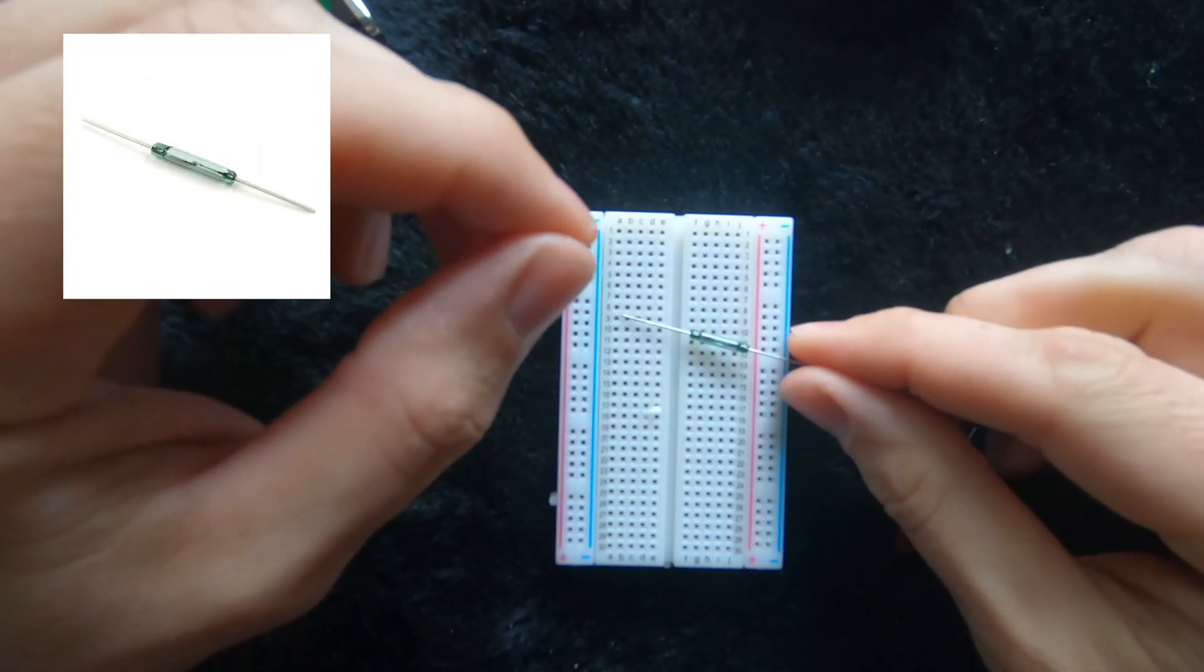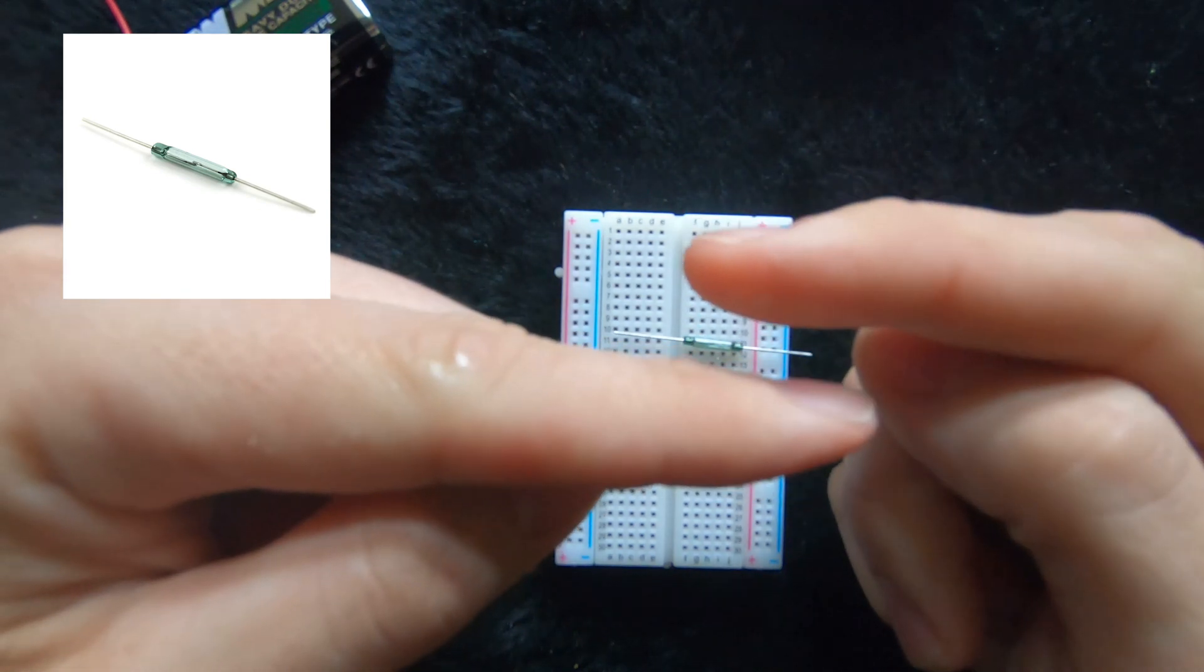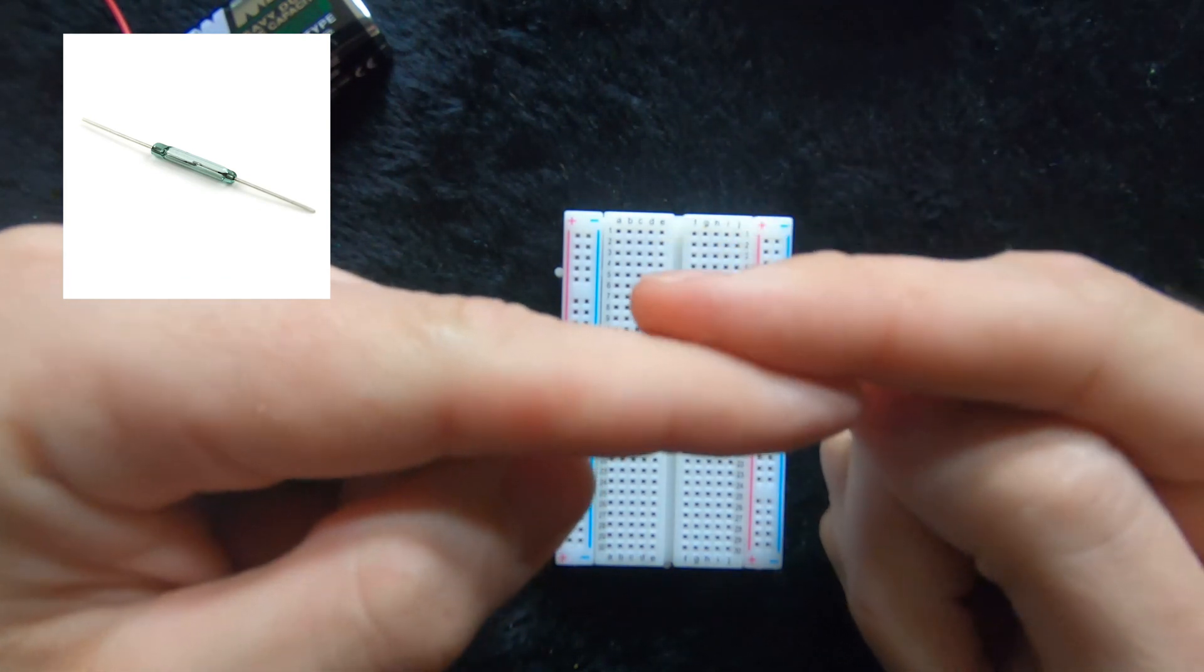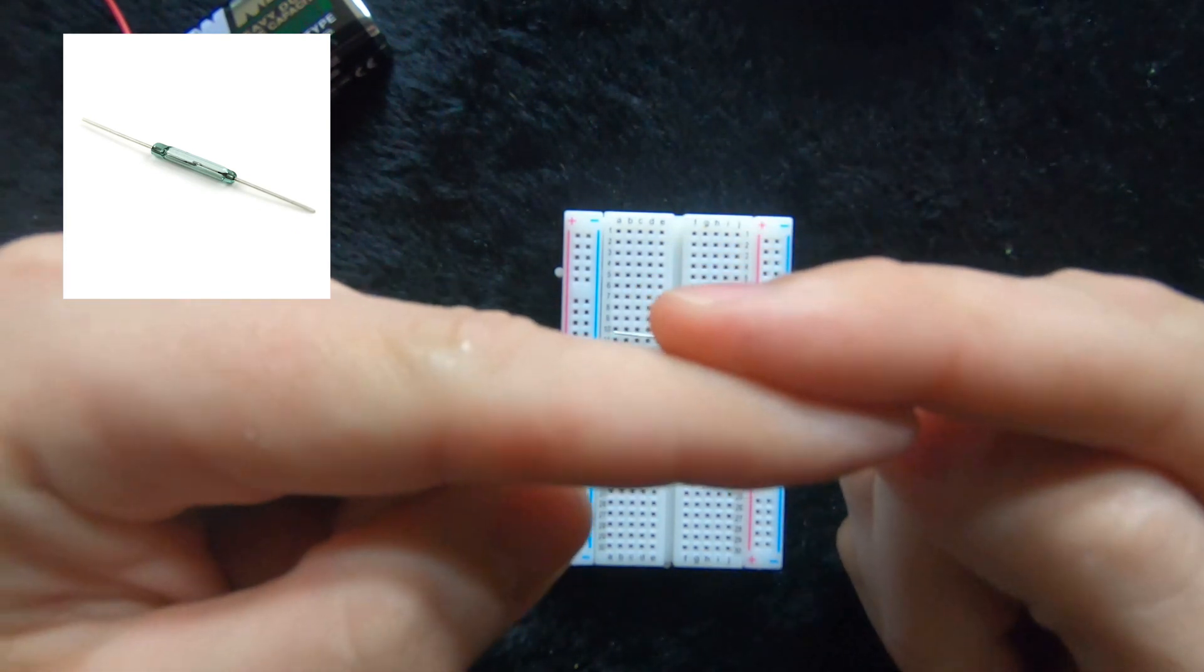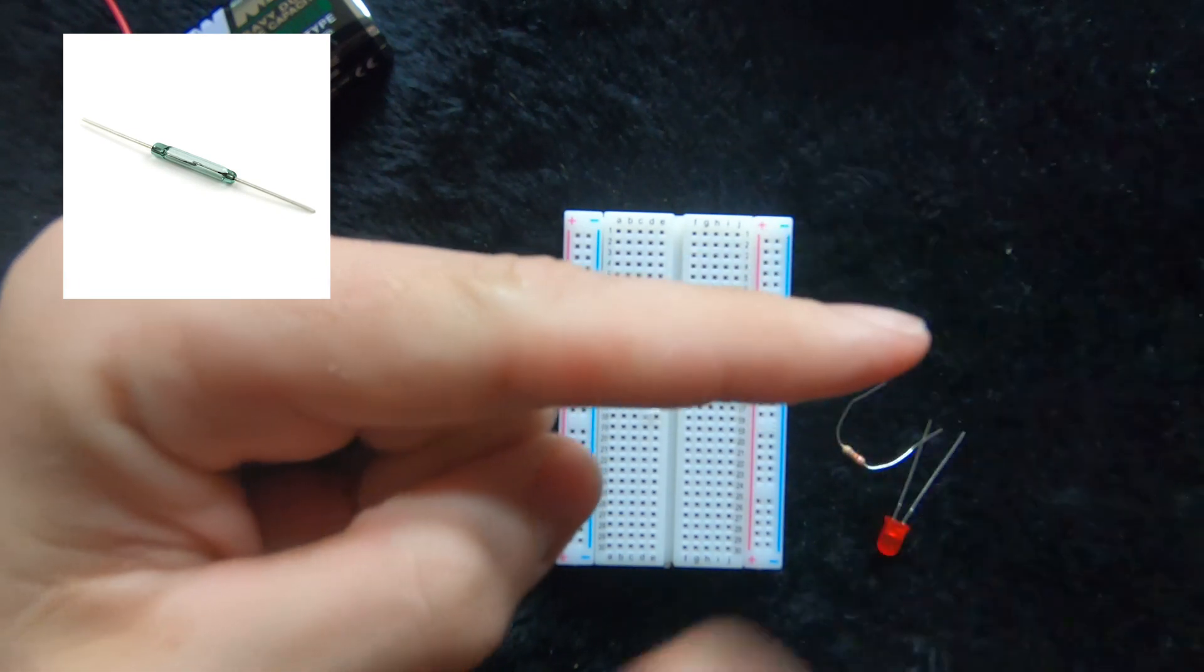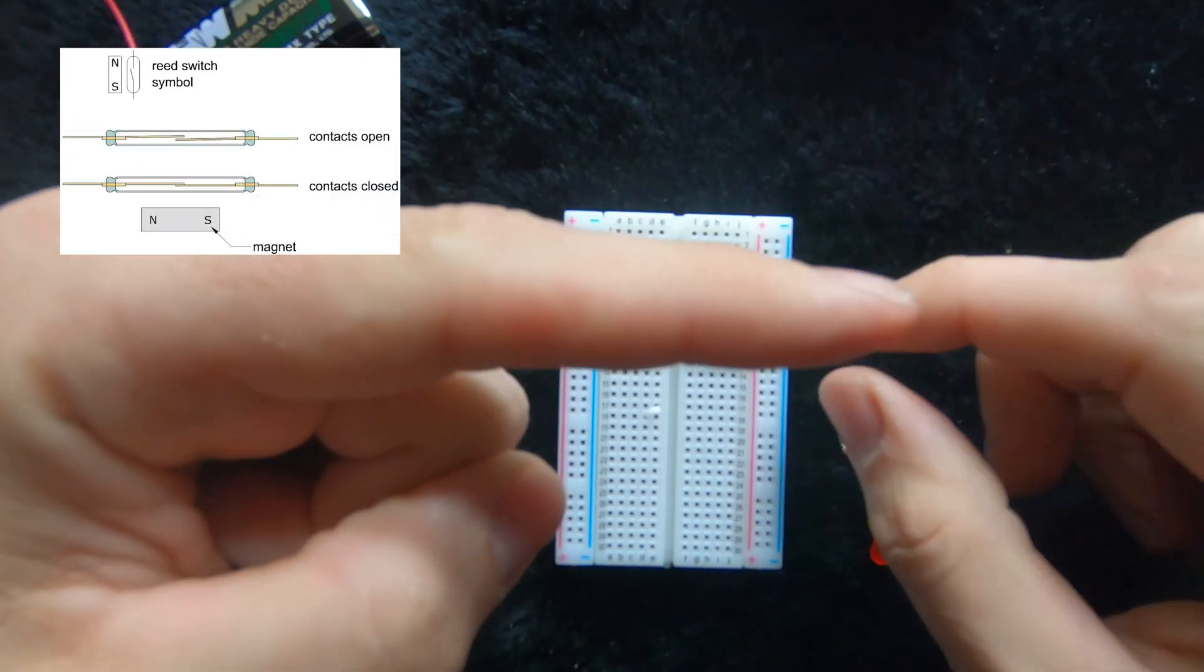The reed switch is basically two pieces of metal that sit next to each other like this, and when you put a magnet next to it, it draws them together making an electrical connection, switching it on so that the current can flow through the component.